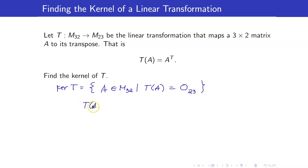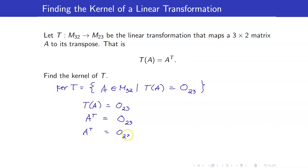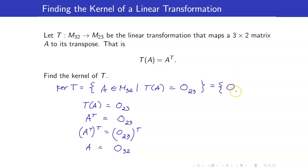If we look at T(A) = 0_{2,3}, and T(A) by definition is A transpose, then taking the transpose of both sides gives us A equals the transpose of the zero 2 by 3 matrix, which is just a zero matrix of size 3 by 2. So therefore, the kernel of T is just the zero matrix in M32, and it only consists of a single element.